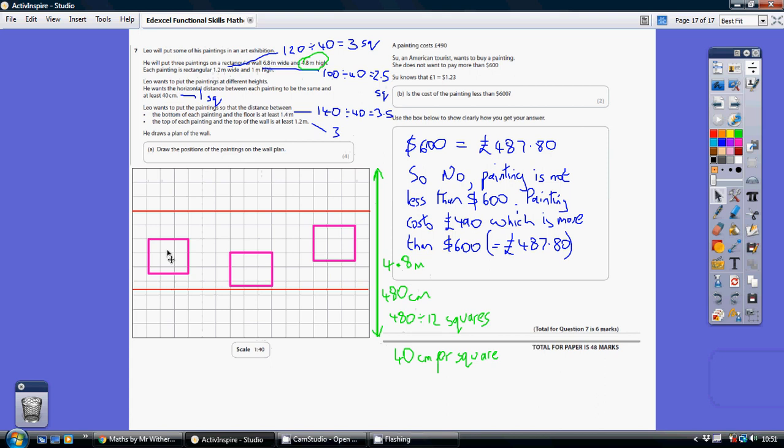So eventually, when we go and put our 3 paintings on the wall, they're going to be 3 squares wide by 2.5 high. Now there's other bits and pieces we've got to do. We've got to make sure the bottom of each painting and the floor is at least 1.4 metres. Well, that's 140 centimetres divided by 40, which is 3.5 squares high. So each of my paintings has to be above that red line.